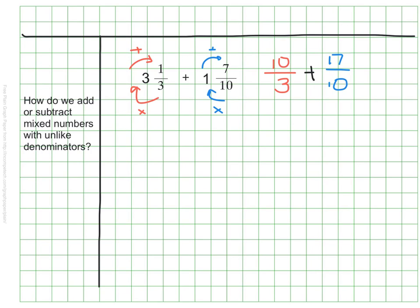How did you do? I said that 3 and 1 third is equivalent to 10 thirds and 1 and 7 tenths is equivalent to 17 tenths. Now these are different denominators. Before we can continue, we need to find a common denominator. That might have been what you guessed earlier on. That's the difference here. We have to find a common denominator.